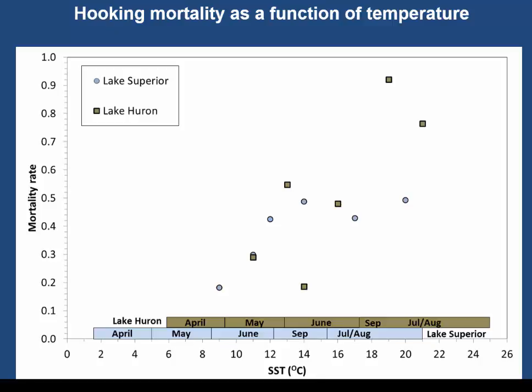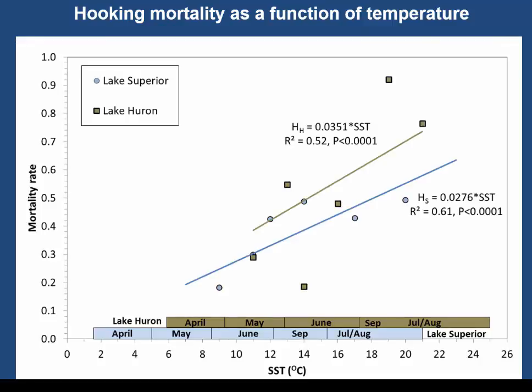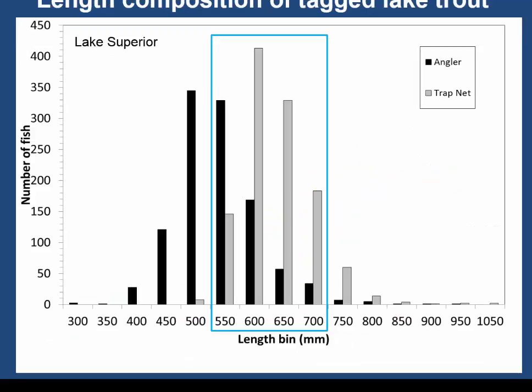We examined hooking mortality as a function of temperature. Each dot represents a hooking mortality estimate at the temperature when the fish was released, with blue bars representing Lake Superior and brown representing Lake Huron temperature regimes, along with corresponding months. An estimate is obtainable only when trap-net and angler groups are tagged at the same temperature. A simple regression of the data shows a positive slope — as release temperature increases, hooking mortality estimates increase.